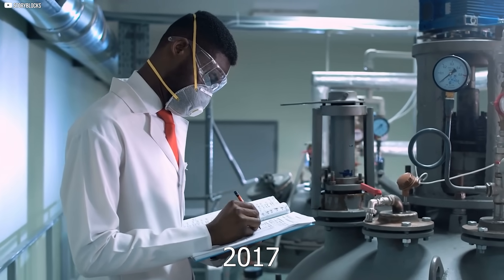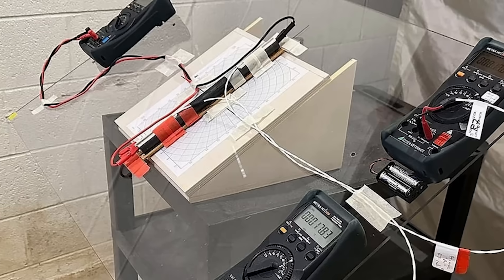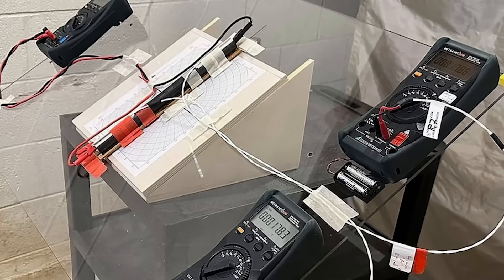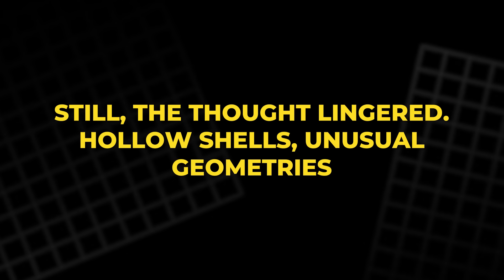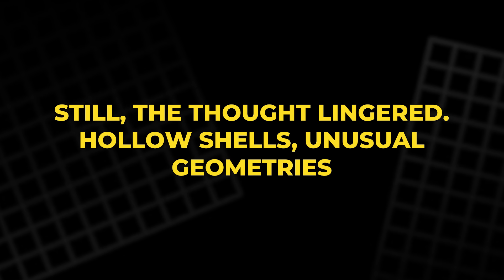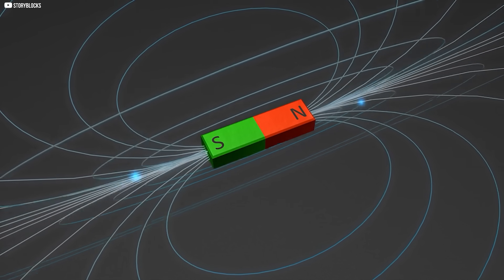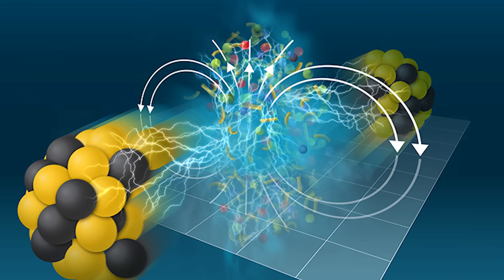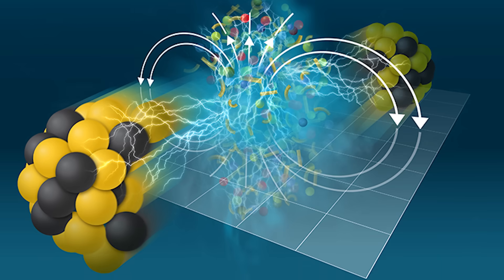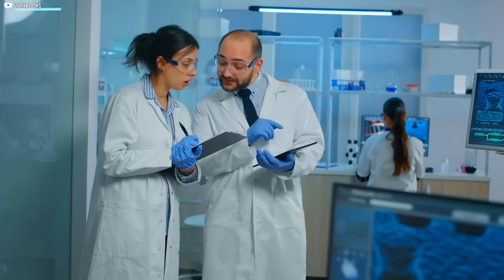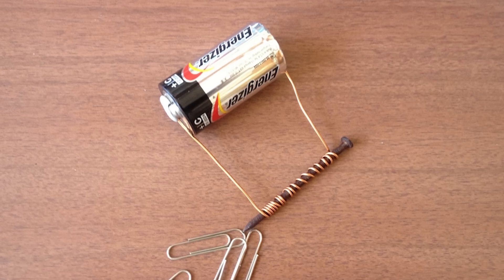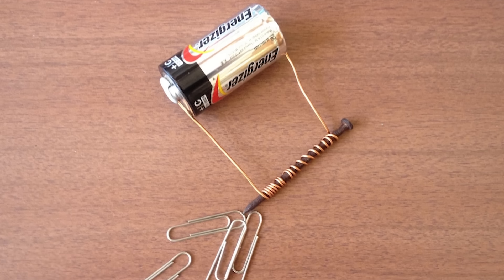A year later, in 2017, an experiment was attempted to test their idea. The setup was crude, and the results came back empty. To many, this was proof enough that the theory was flawed. Still, the thought lingered: hollow shells, unusual geometries, new ways of letting the magnetic field interact. Something about it refused to disappear. A door had been cracked open, even if only slightly, and sometimes that is all science needs to begin again.